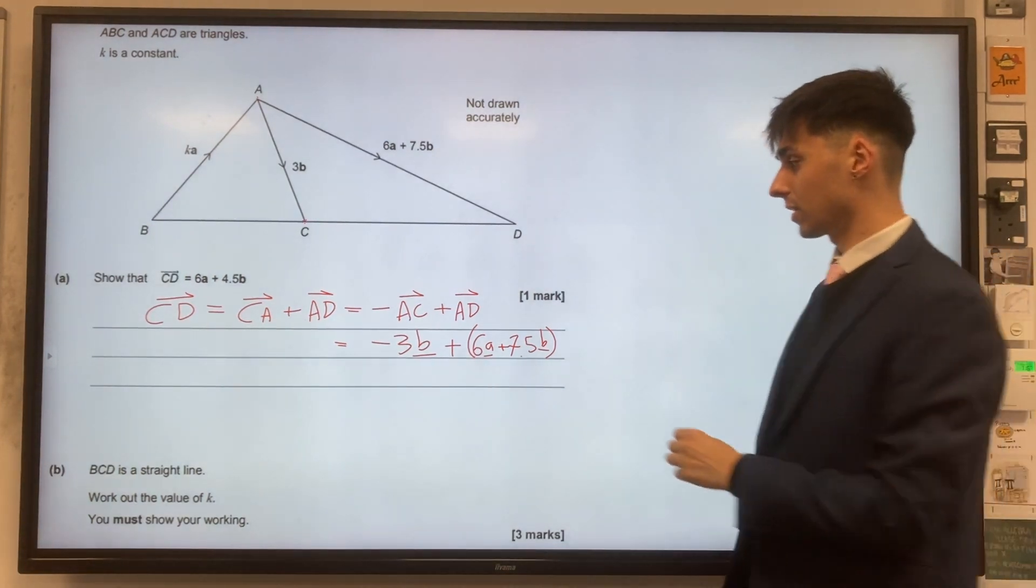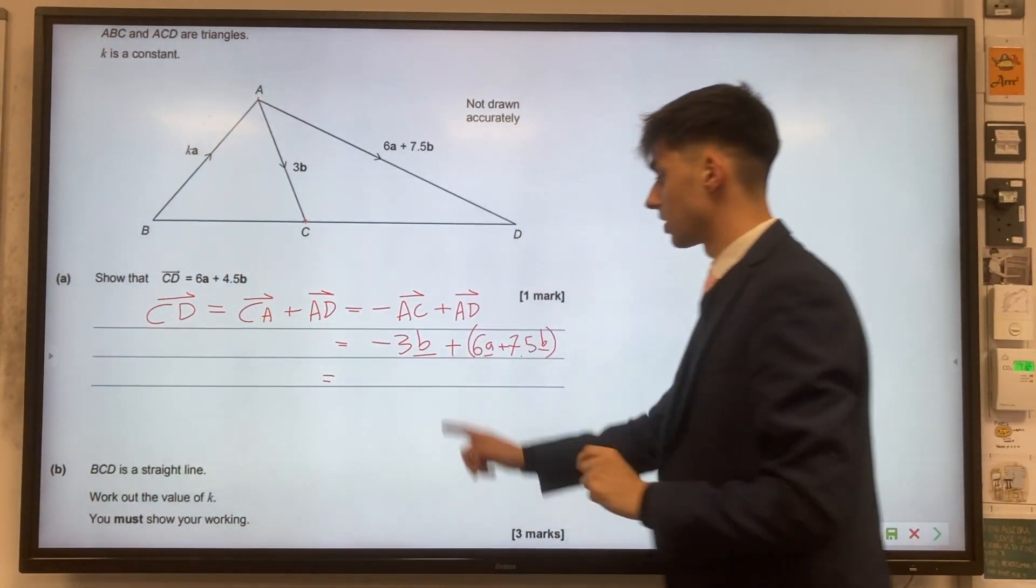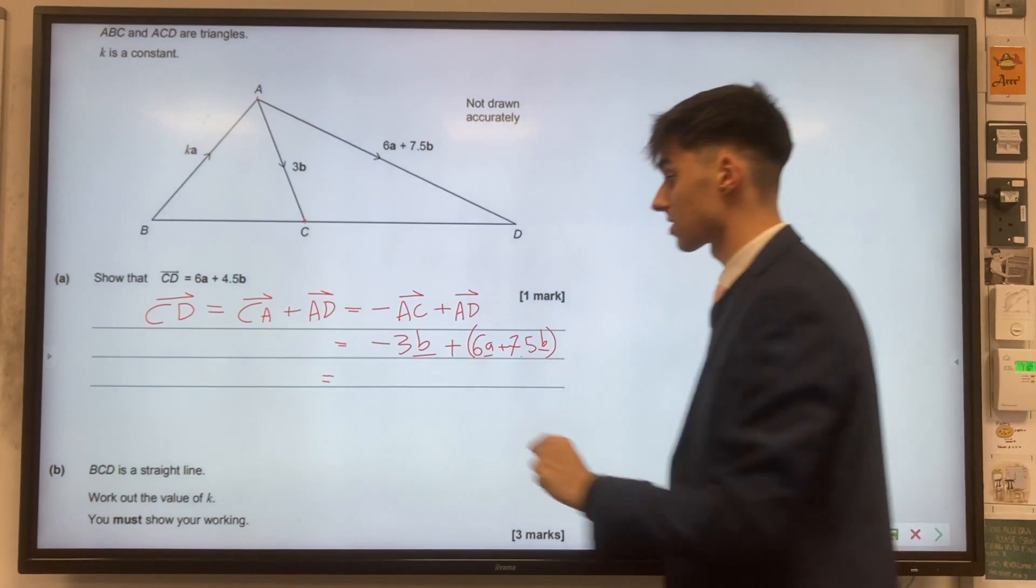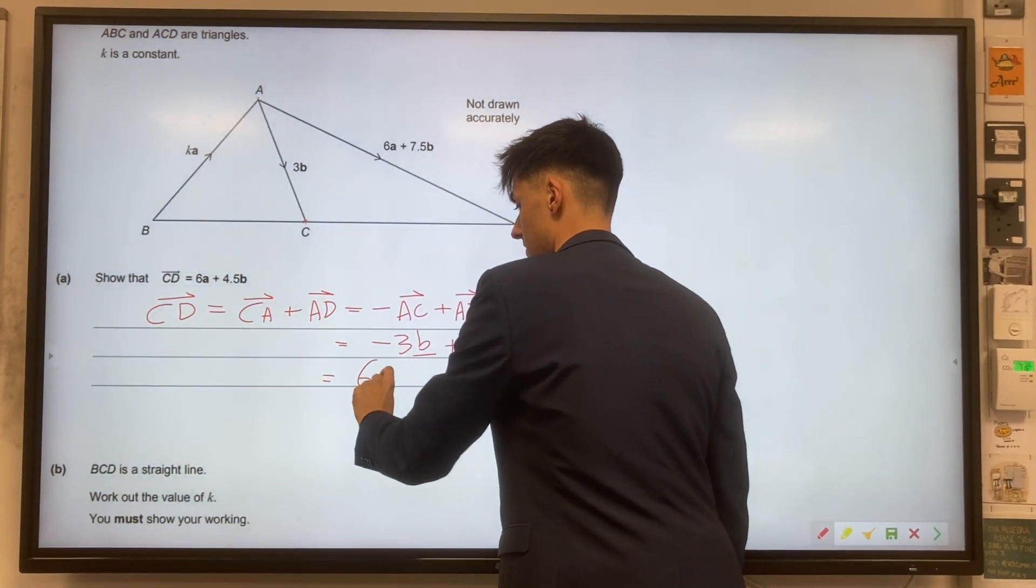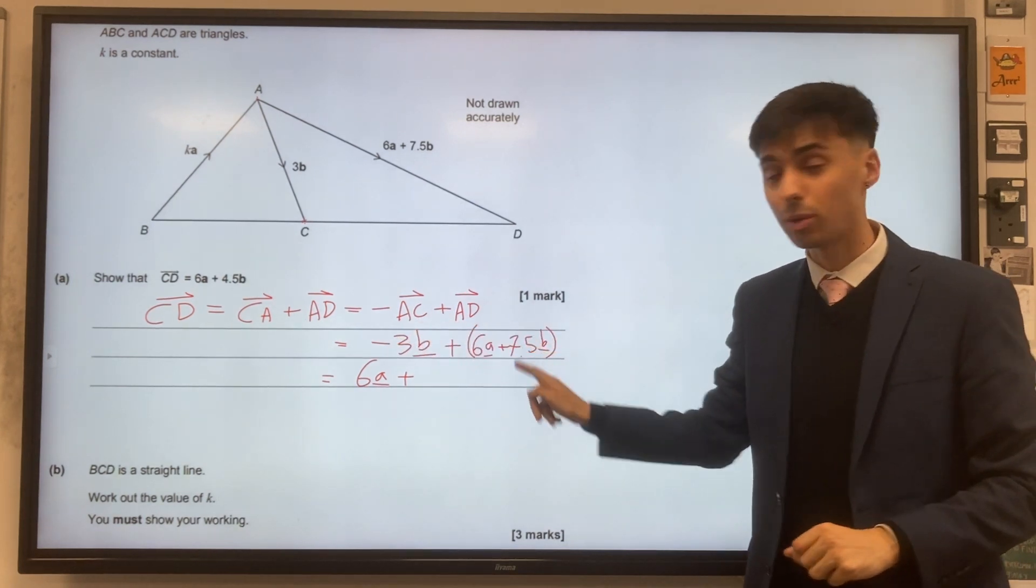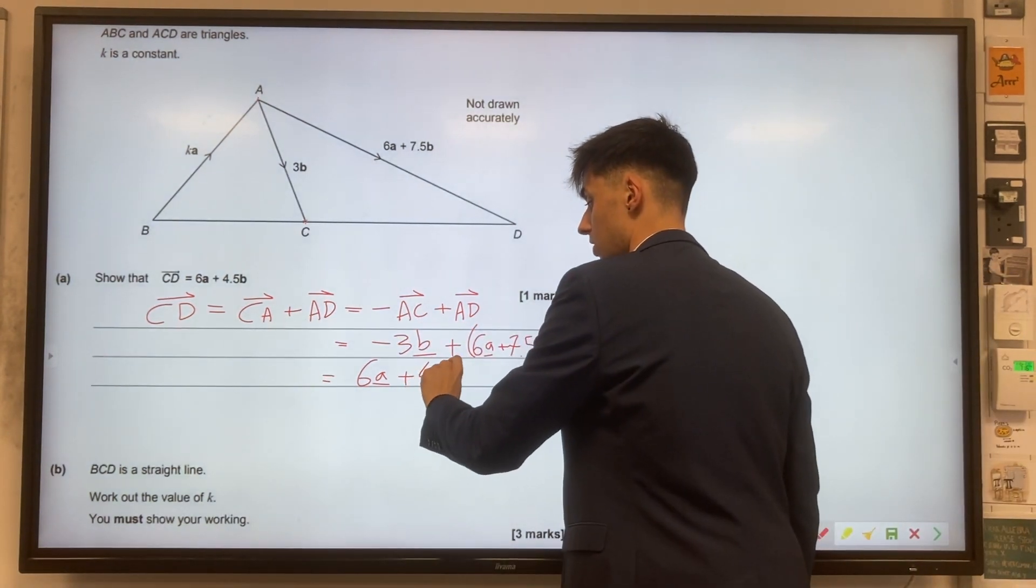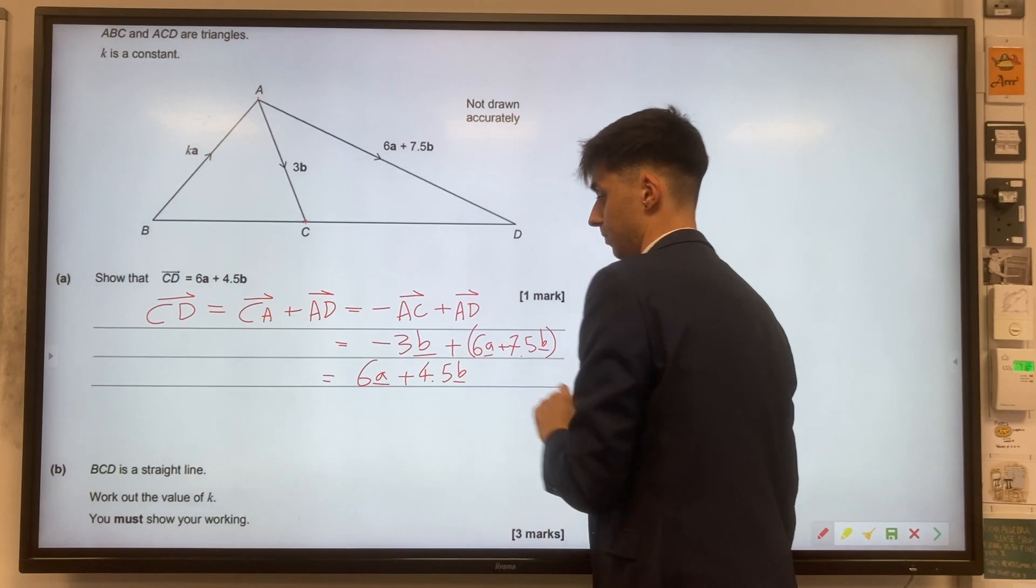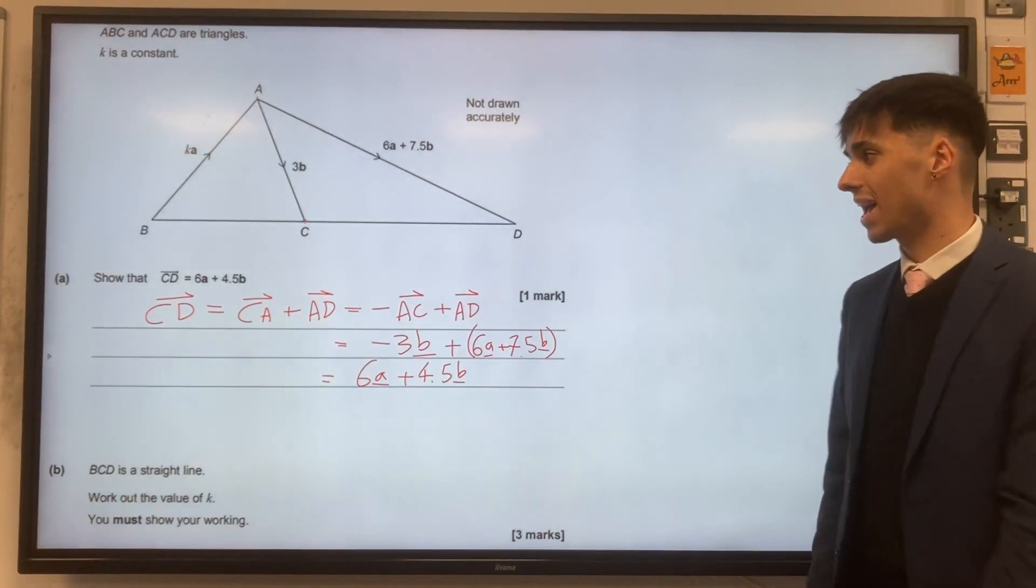And now adding everything up that we've got. In terms of A's, we just have plus 6A. And for our B's, we have minus 3 plus 7.5, which gives us plus 4.5B. So that's part A done.